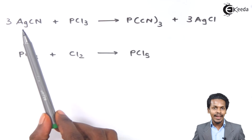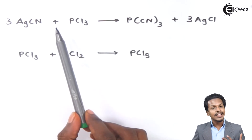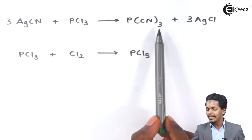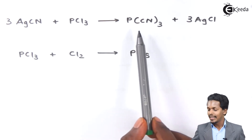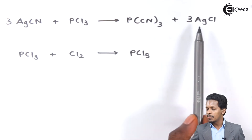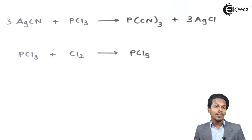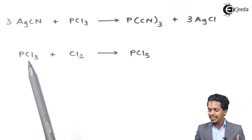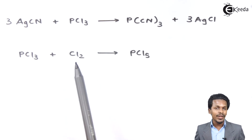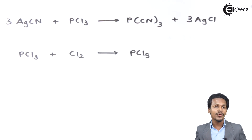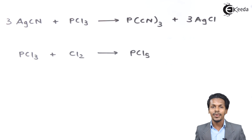When PCl3 is reacted with silver cyanide — 3 moles of AgCN reacted with PCl3 — it forms phosphorus cyanide, along with 3 moles of AgCl. Also, whenever PCl3 is reacted with chlorine, it forms phosphorus pentachloride. In the next lecture, I am going to talk about phosphorus pentachloride — its preparation as well as properties.